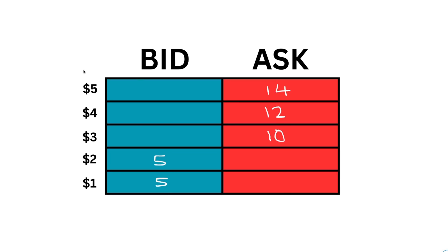Here on the whiteboard we'll discuss how to use and read order flow using the DOM. This is what I look at when I'm trading and scalping — a very simple manner. We have a crude visual representation of a DOM with the bid column and the ask column. As covered in the first video, the bid represents buyers lining up at each price to buy, and the ask represents sellers lining up at each price to sell. We have price levels one through five: five buyers on the bid at two dollars and five at one dollar.